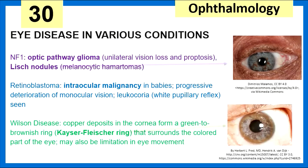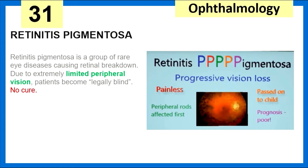Eye disease in various systemic conditions: neurofibromatosis type 1 is associated with optic pathway glioma causing unilateral vision loss and proptosis, and Lisch nodules — melanocytic hamartomas. Retinoblastoma is the most common intraocular malignancy in babies, with progressive unilateral vision loss; associated with leukocoria, where we see a white rather than red pupillary reflex. Wilson disease involves copper deposits in the cornea leading to Kayser-Fleischer rings, with possible limitation in eye movement. Retinitis pigmentosa — remember the P's: peripheral vision loss, painless, passed on to child, and prognosis is poor because there's no cure.